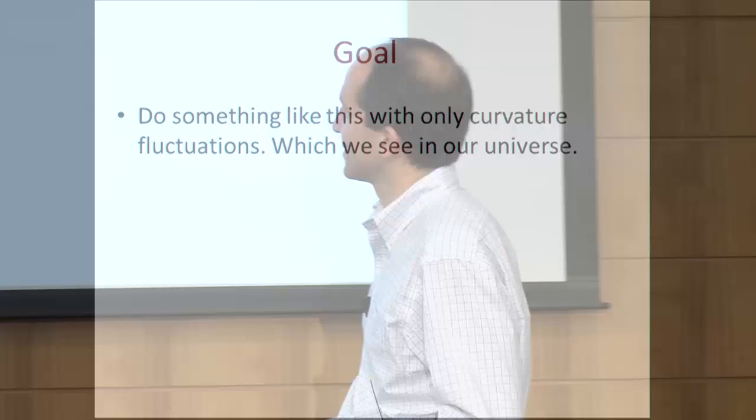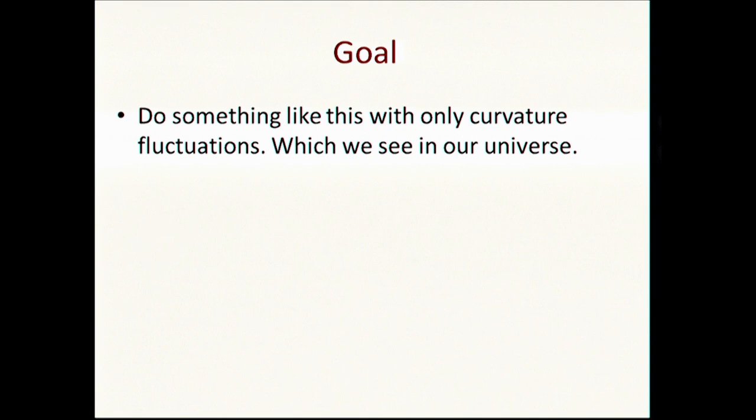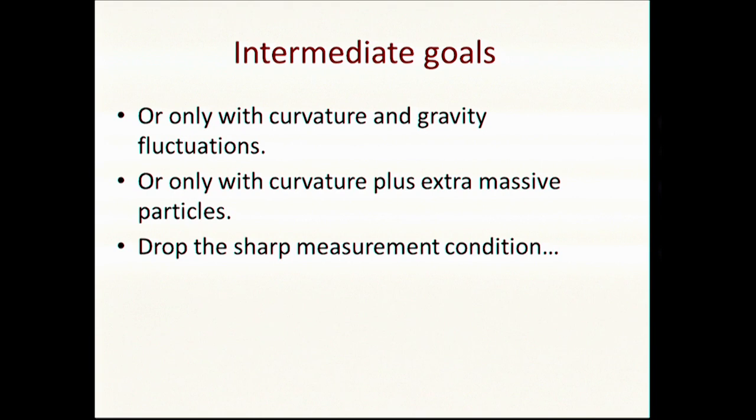Our goal is not to describe those late observers, but us. Something that would be nice, and I don't know how to do it precisely, is to do something like this with only curvature fluctuations. Only the curvature fluctuations we see, and somehow use them to think about some complicated observable, some more sophisticated observable, where the curvature fluctuations self-measured themselves. And in this way, find something of that kind. Some intermediate goals could be to understand this purely with curvature and gravity fluctuations, or perhaps curvature fluctuations, and you postulate the existence of other perhaps particles which perhaps exist during inflation, and using them, maybe we can get this goal.